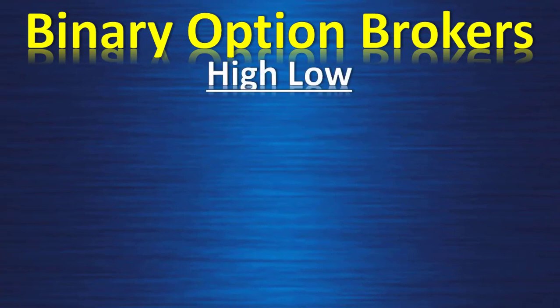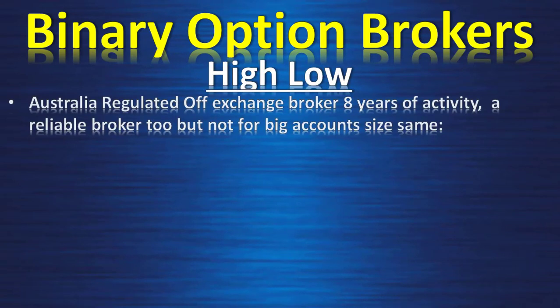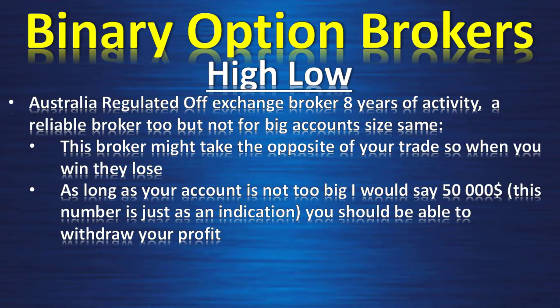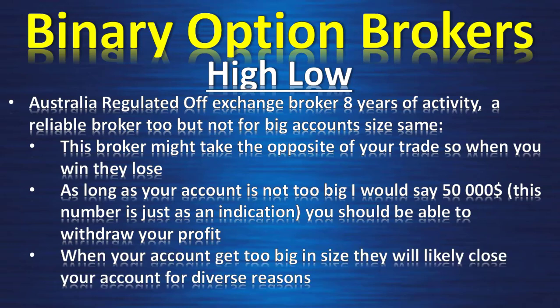Next is Hilo. Hilo is regulated in Australia and it's an off-exchange broker too, with 8 years of activity and a reliable broker — but same as Binary.com, not for big account sizes. This broker might take the opposite side of your trade, so when you lose, they win. As long as your account is not too big — I would say the same size, $50,000 — you can trade with them. But above a $50,000 account, it's better to find another way, and they will likely apply the same practices and close your account if you make too much profit.